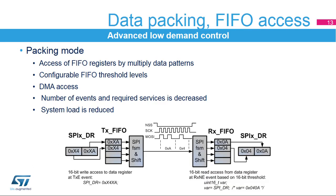When communication speeds are fast and data frames short, it can be a demanding task to ensure correct data flows when the clock signal becomes continuous and full duplex mode is used. Slave nodes have to properly service all the transactions sent by the master to prevent any data overrun or underrun conditions. When the data frame size fits into a byte, packing mode can be used. Then multiple data patterns can be written or read in a single access to the FIFO registers. Together with the proper setting of the FIFO threshold event, the number of events to service will decrease to better control the data flow. When the DMA is used additionally, overall loading on the system is significantly reduced. In the figure shown, you can see the principle of how two short 4-bit data frames can be written and read by a single 16-bit access in the dedicated FIFO registers.